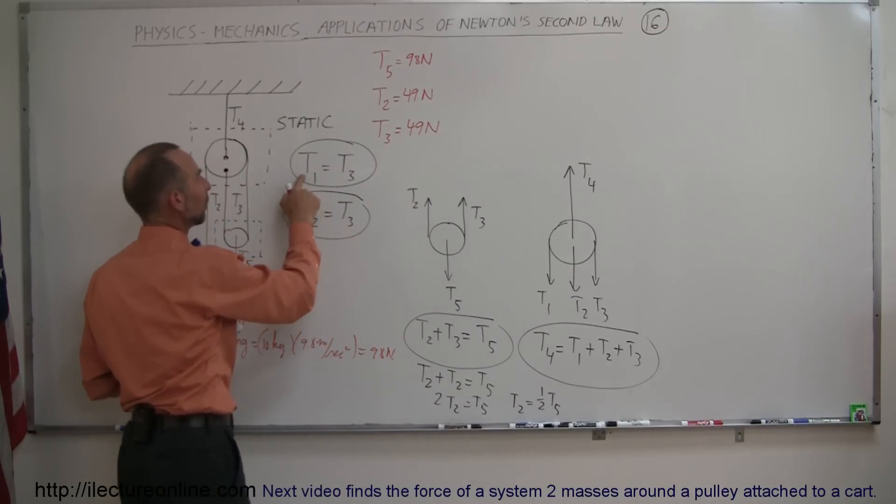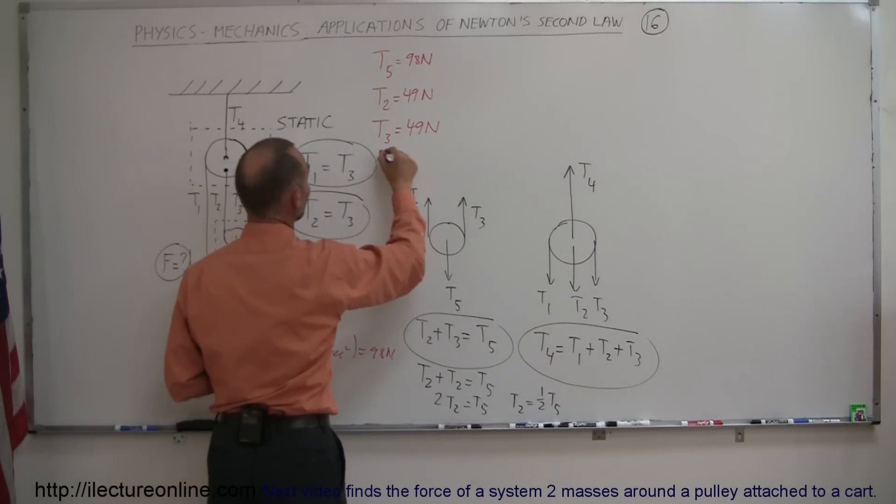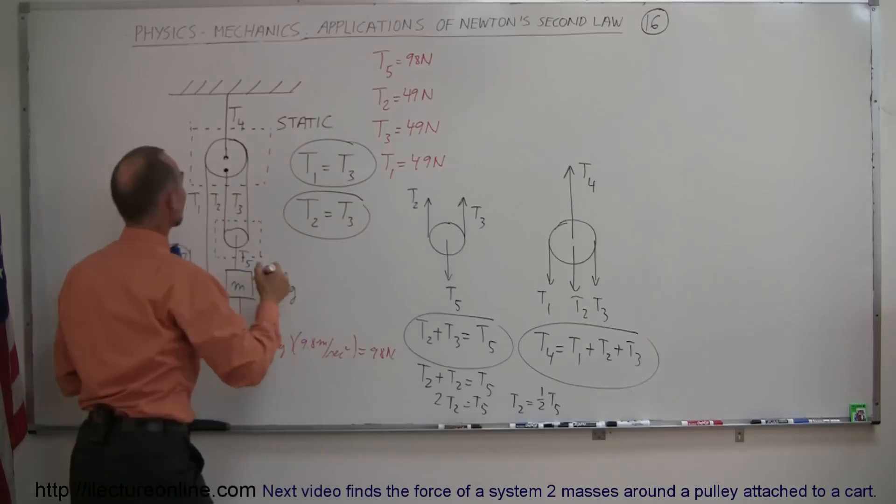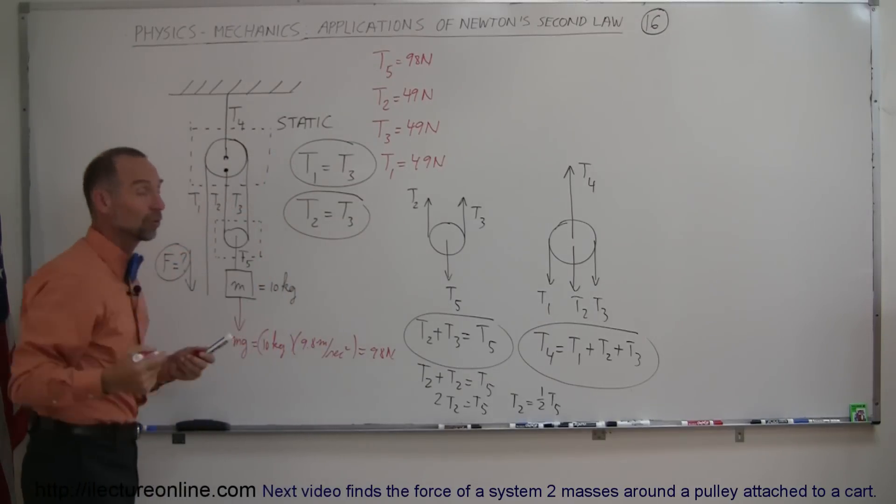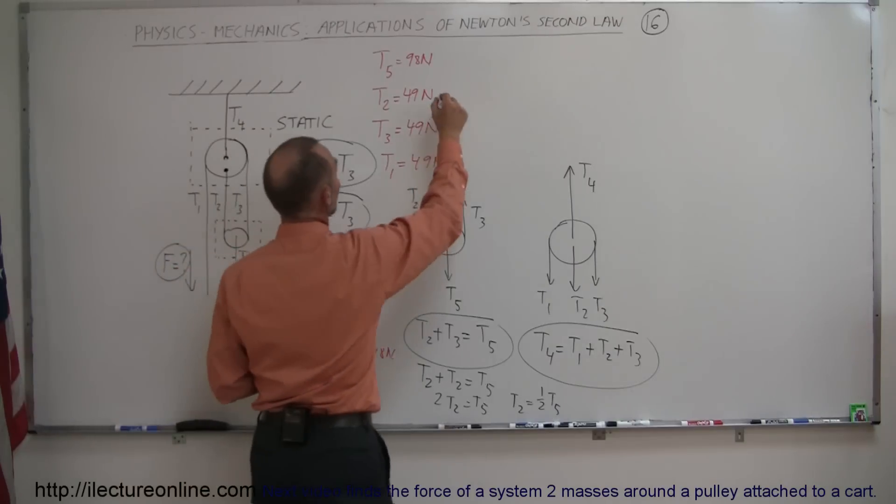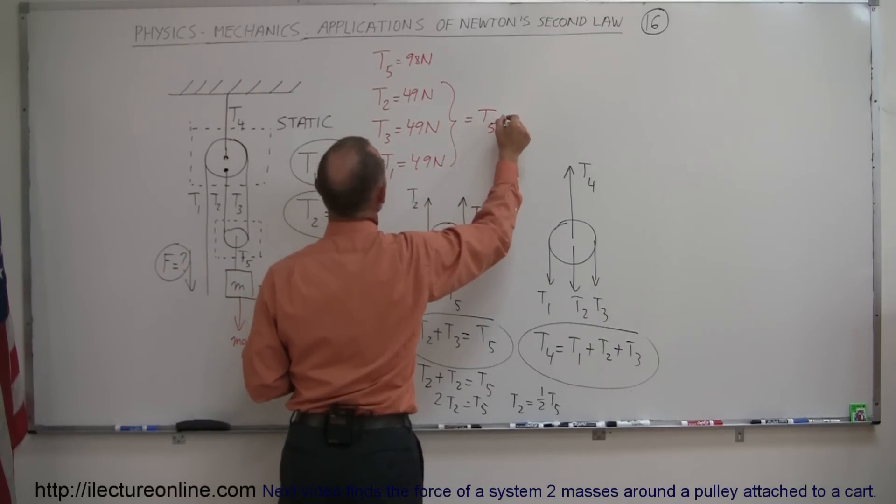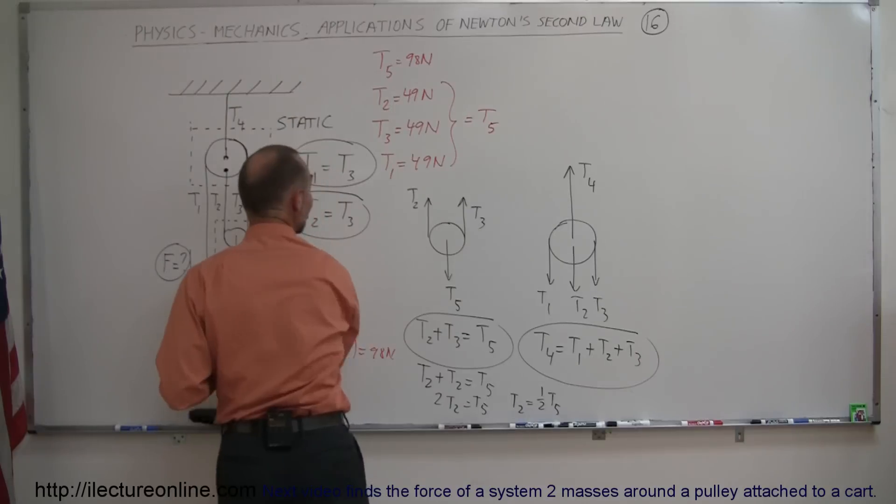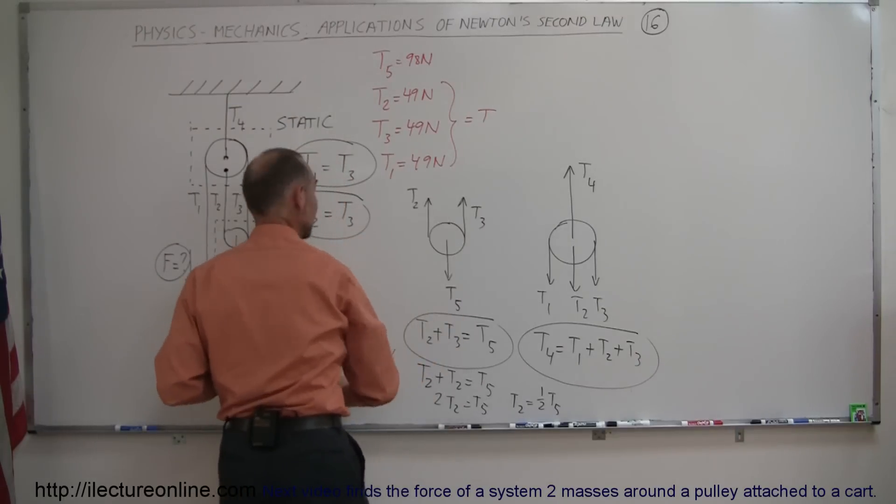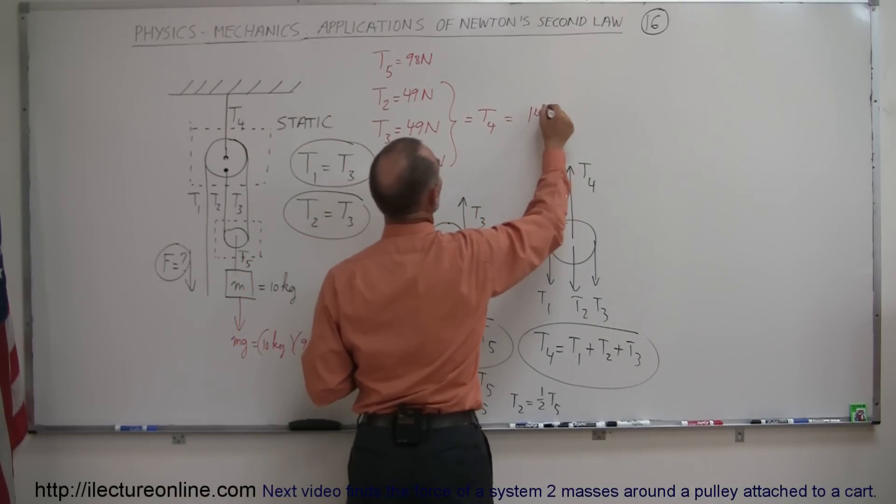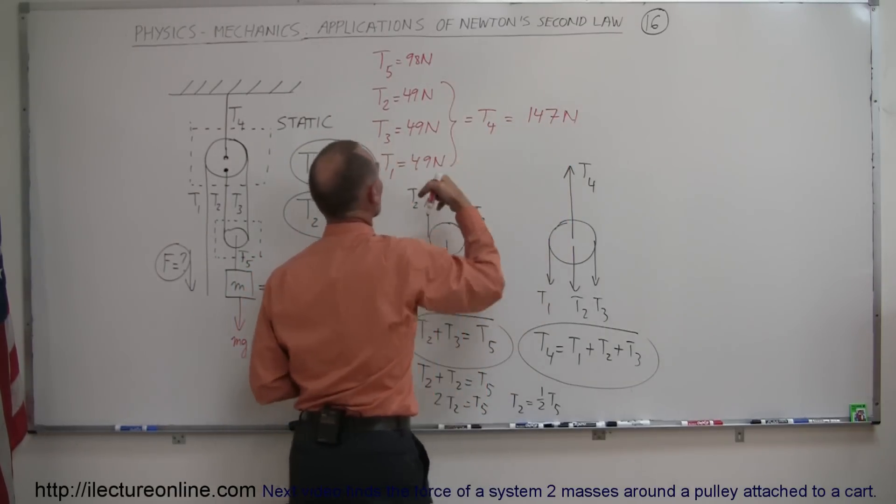And then we see here that T1 is equal to T3, that means that T1 is equal to 49 newtons, and now we come up here and say that T4 is equal to the sum of T1, T2, and T3, which means that it's equal to the sum of these three, so this is equal to T4, and so this is equal to 147 newtons, simply adding those three together.